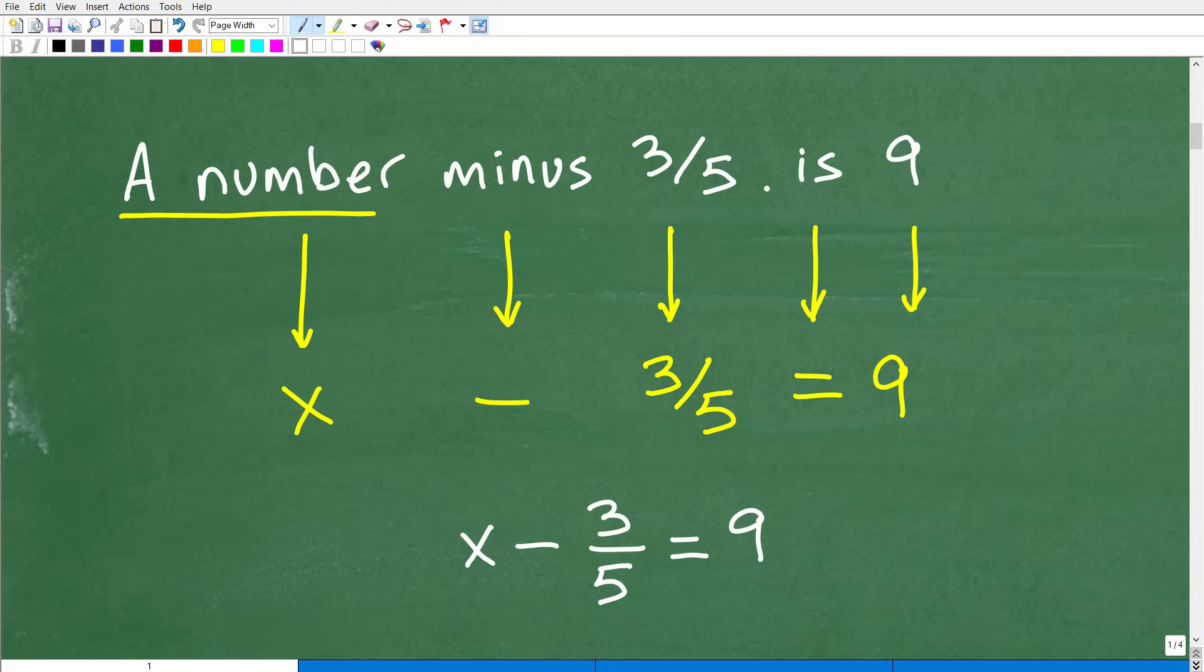So a number minus three-fifths is nine. So in mathematics or algebra, a number is what? Well, we don't know what a number is. It's just some number, right? So this is where you want to use a variable. That number could be x, right? X could represent a number. Y, Z, A. These are just variables. A variable represents a number. So in algebra, when we use a variable, we're just representing a number. So a number, let's call that number, let's call our number x.